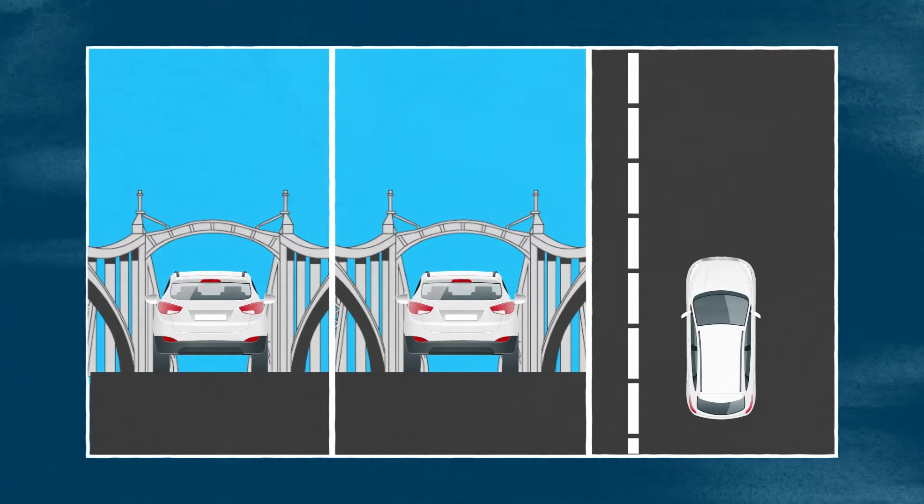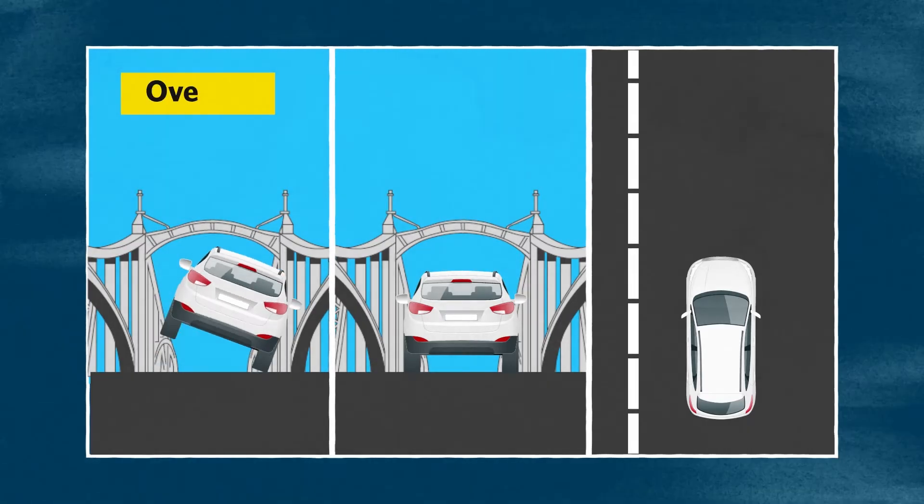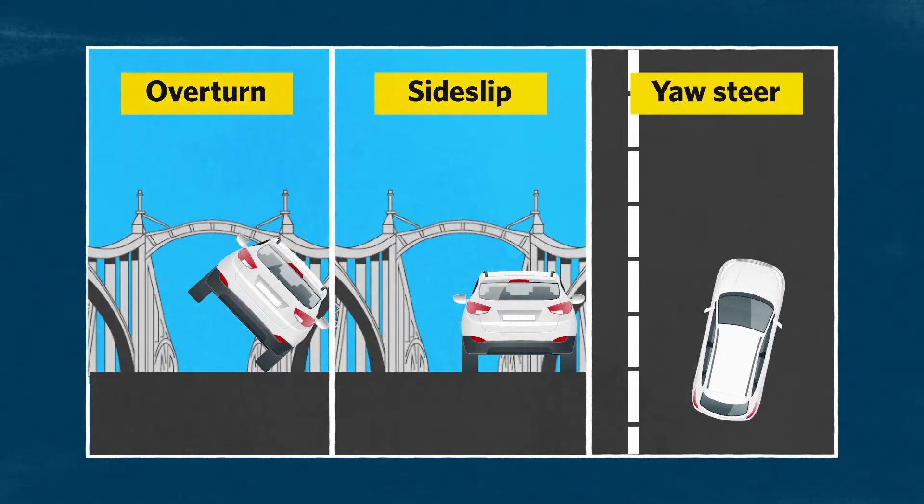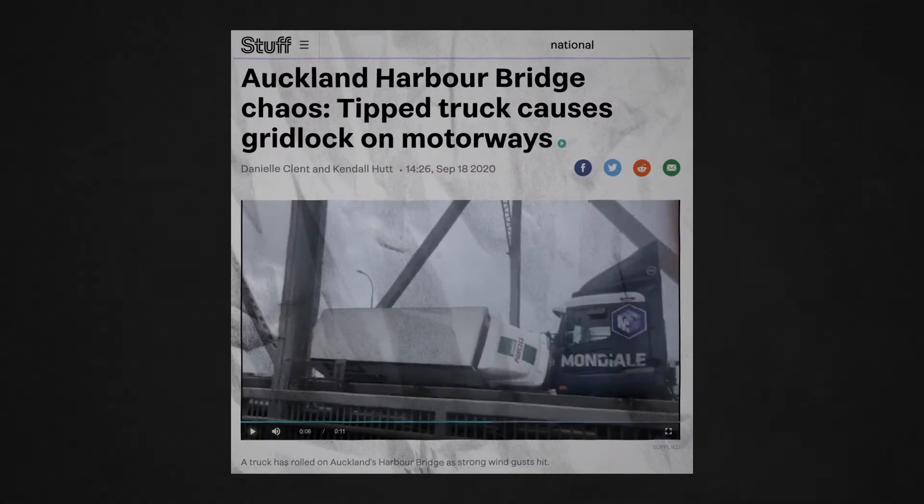Perpendicular winds have the potential to cause a vehicle to overturn, side slip, or yaw steer, all of which could result in a vehicle impacting the structure in the same way that happened in 2020, where a truck was blown into a support beam, resulting in major travel disruption until it was repaired.